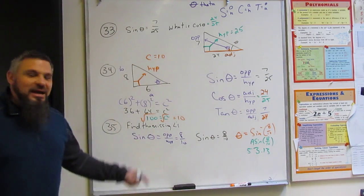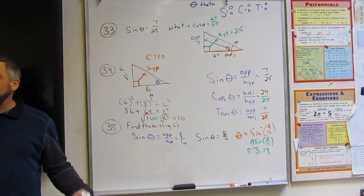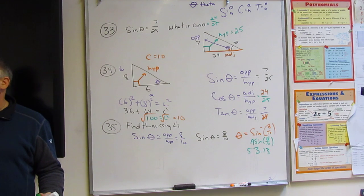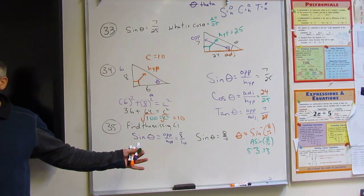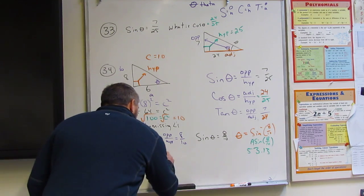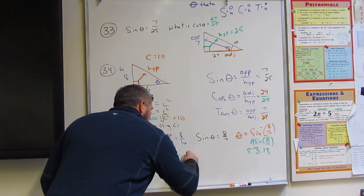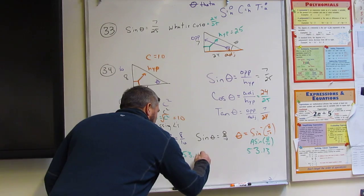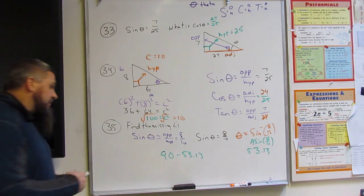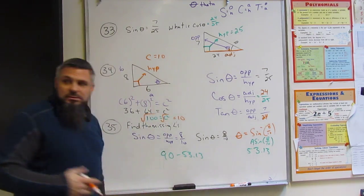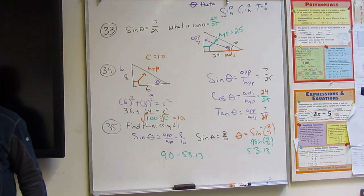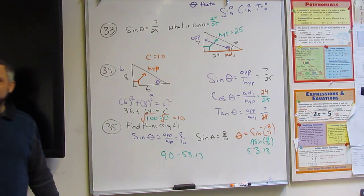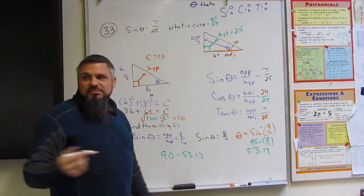And then if I want to find the other angle, we know it's a triangle, it adds up to be 180. One of them is 90, so the other one is complementary. So I just take 90 minus 53.13, and I get how much? Well, 53 and what, 37? So it would be 36.87.